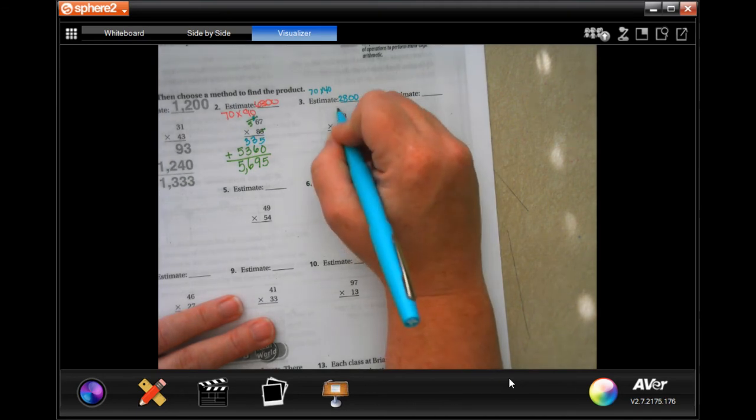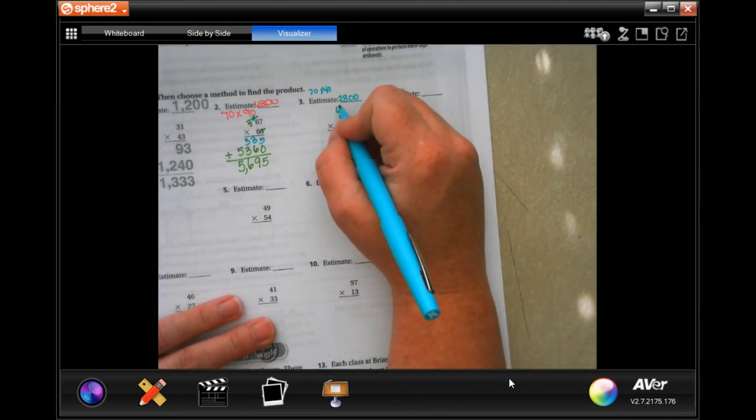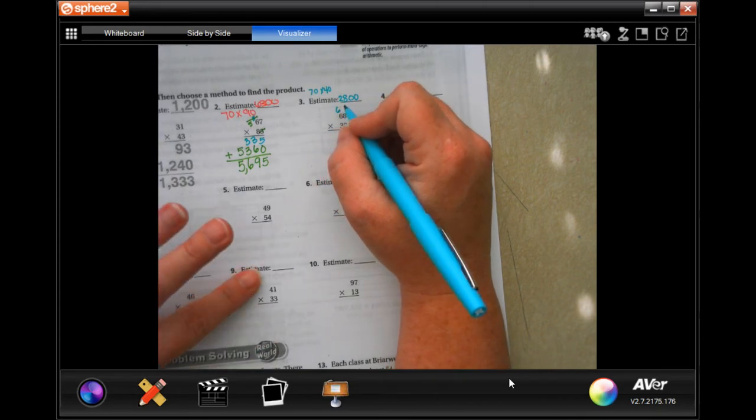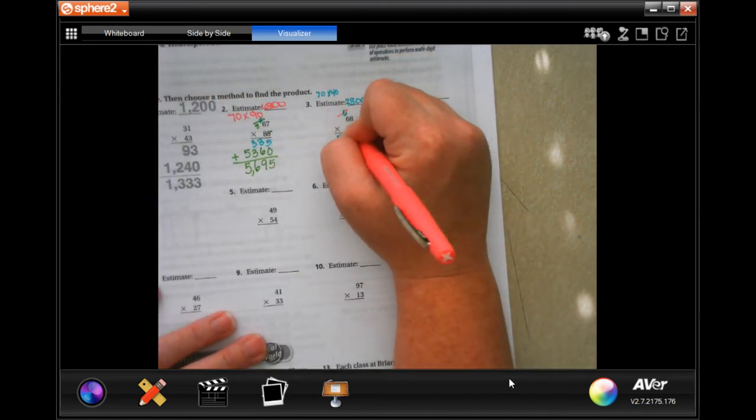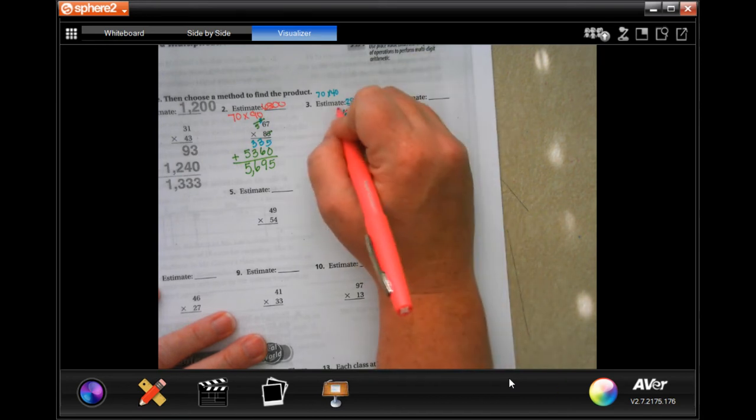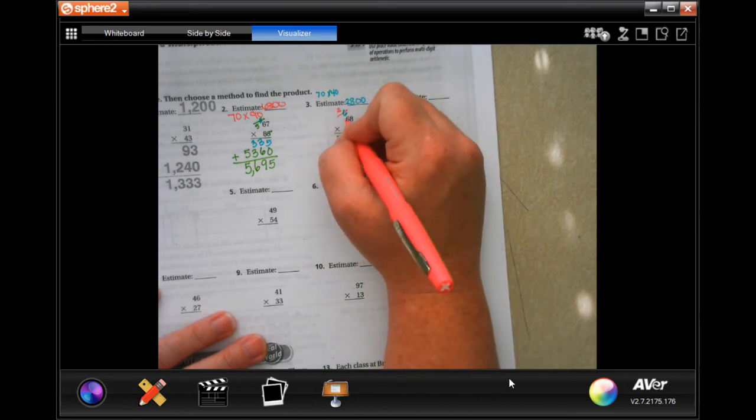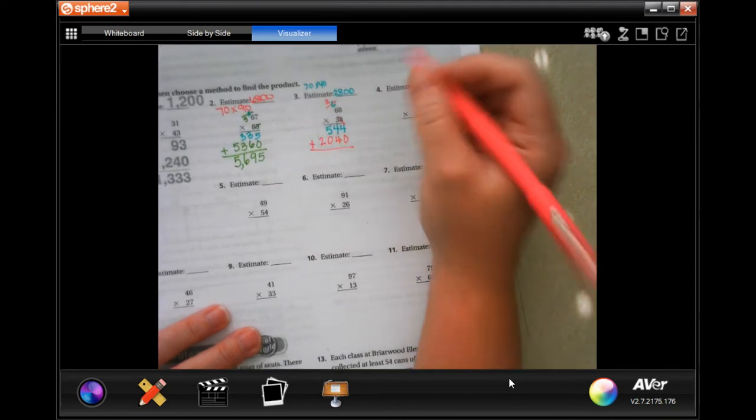Now, eight times eight is 64. Carry our six. Eight times six is 48, plus six more is 54. We're going to go back through. We're going to tic-tac-toe. Three times eight is 24. Carry our two. Three times six is 18, plus two more is 20. Add them up.